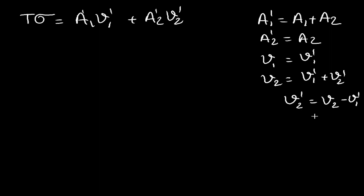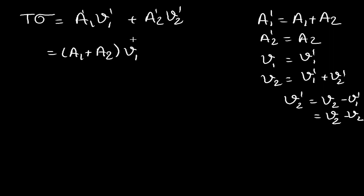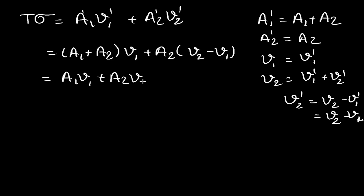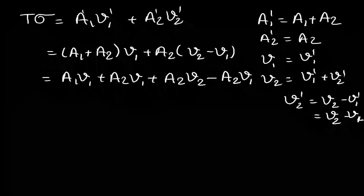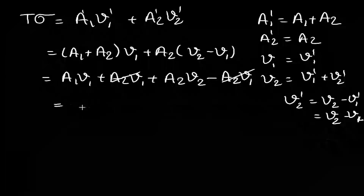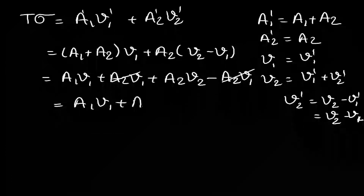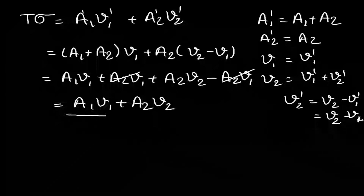Expanding: tσ = A1μ1 + A2μ1 + A2μ2 − A2μ1. The two A2μ1 terms cancel, leaving tσ = A1μ1 + A2μ2.